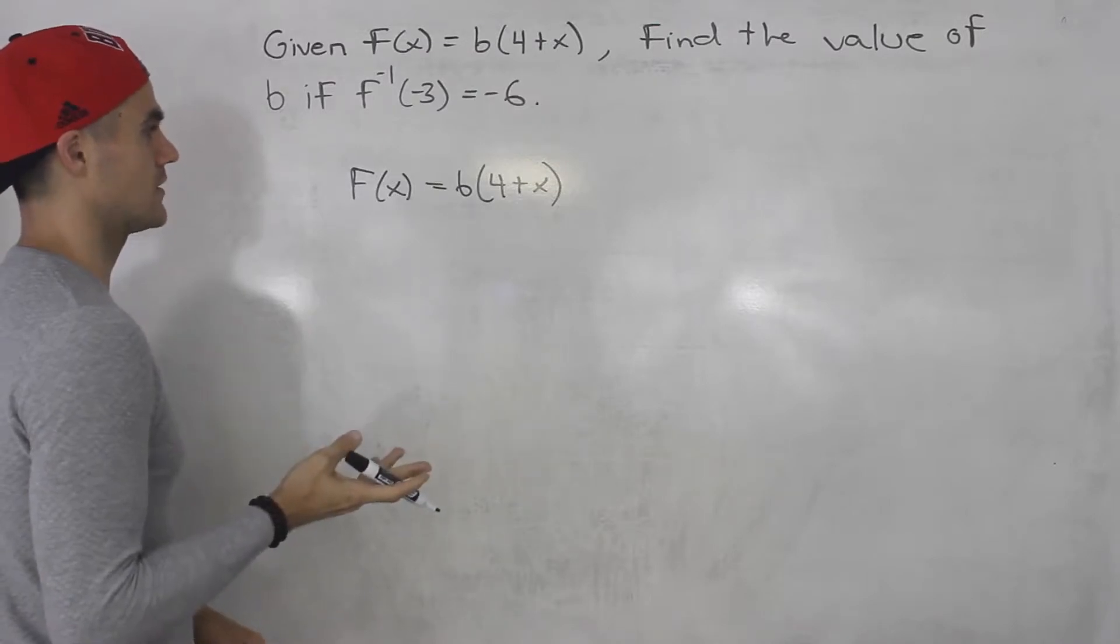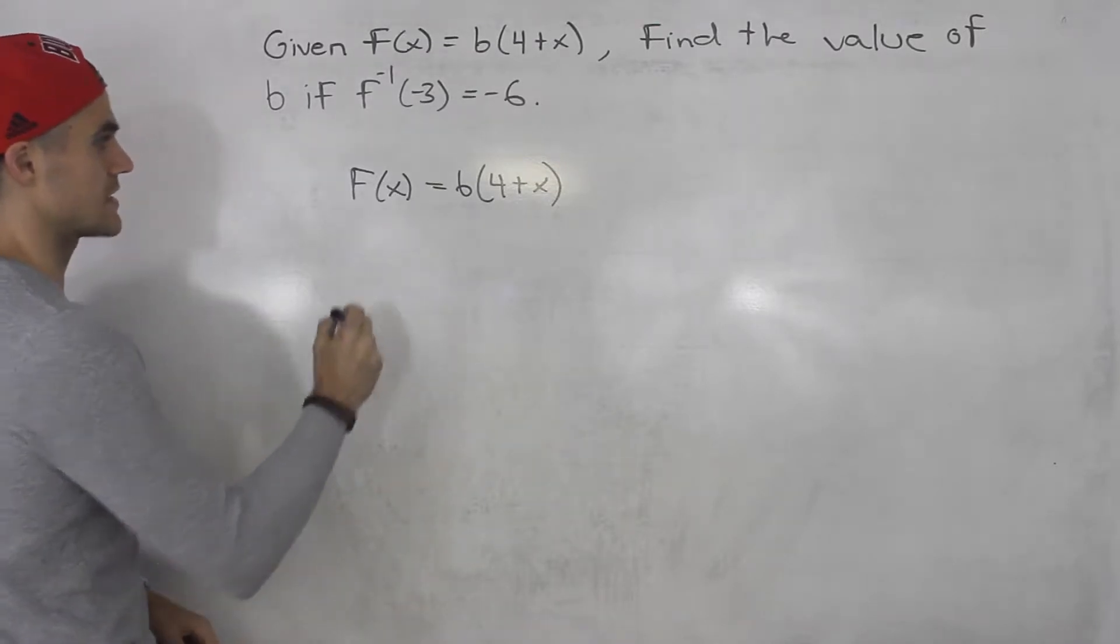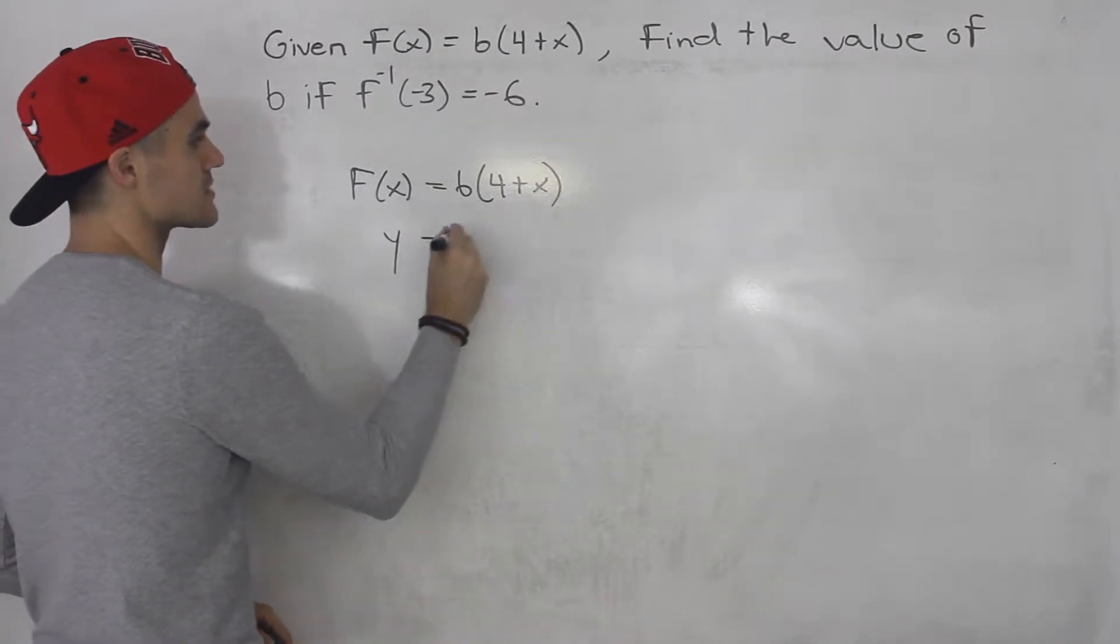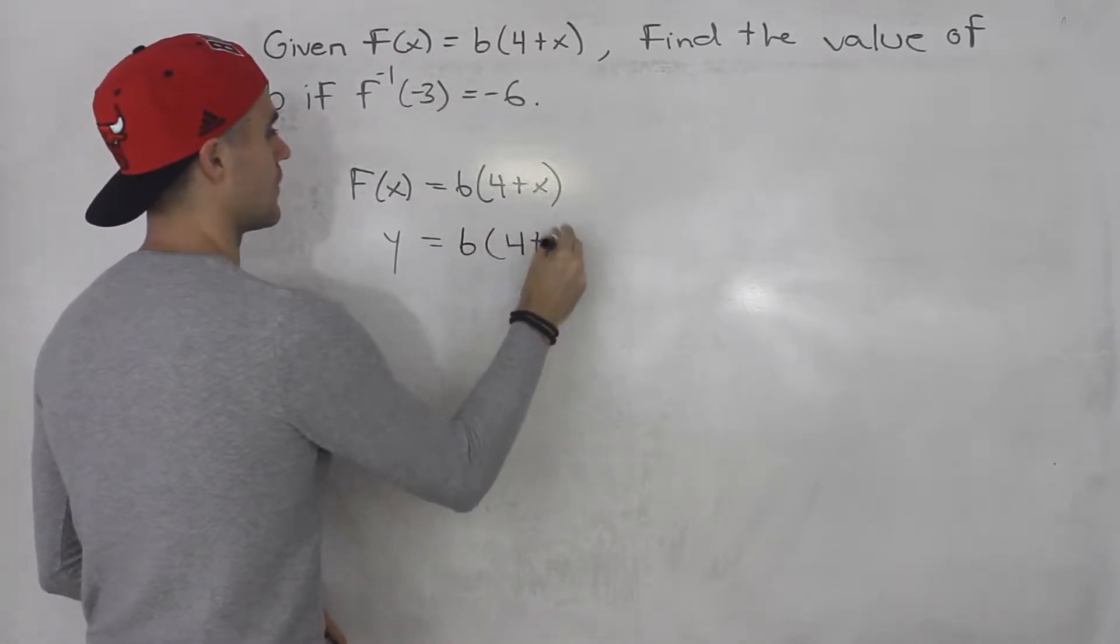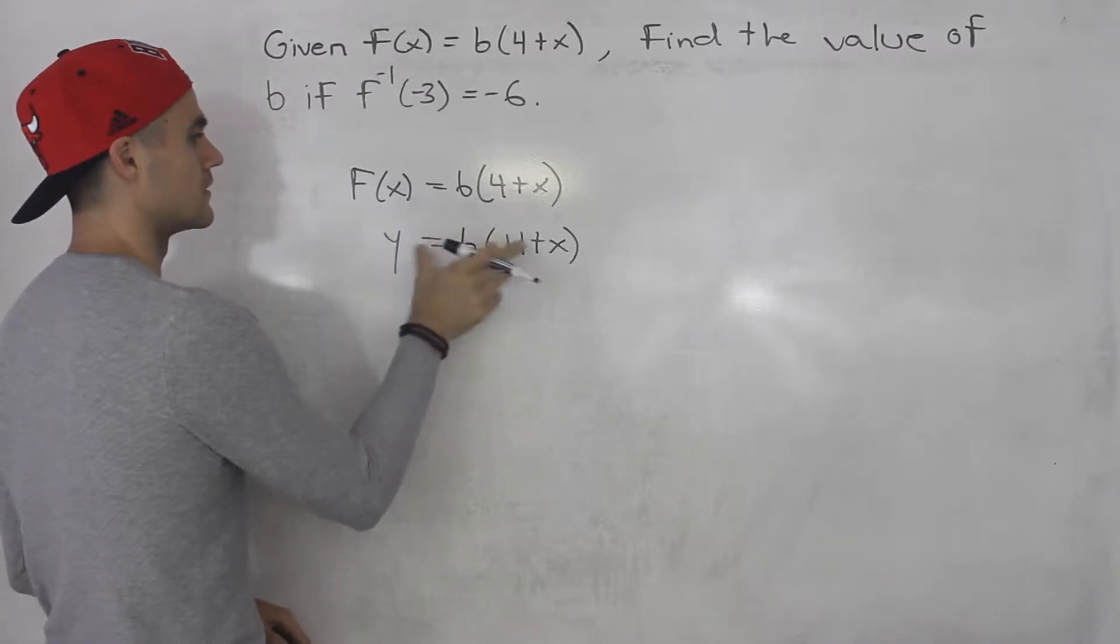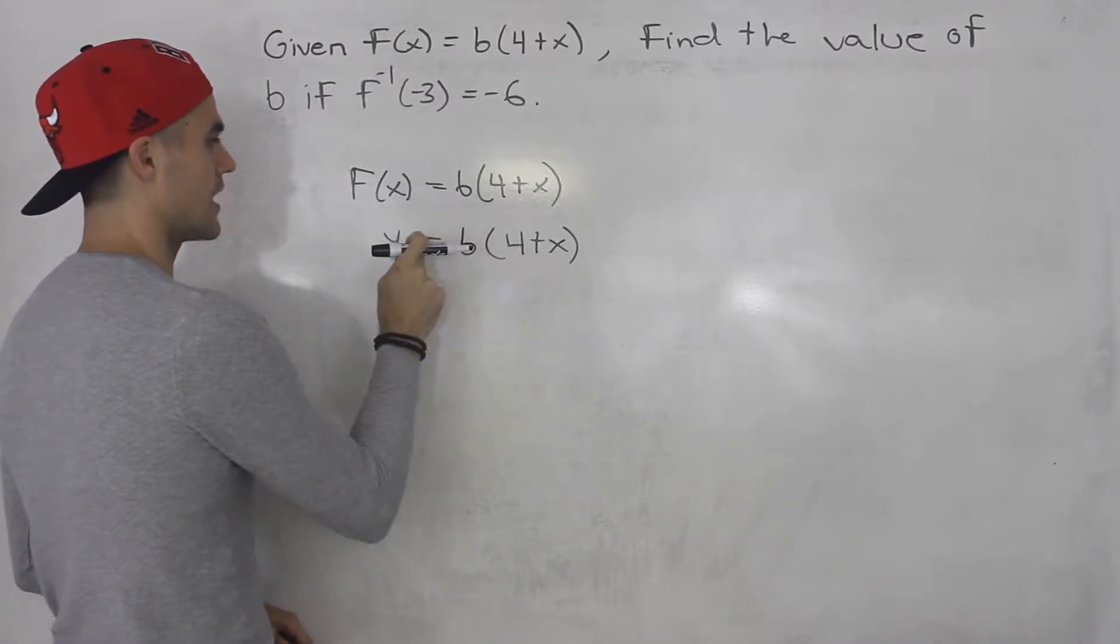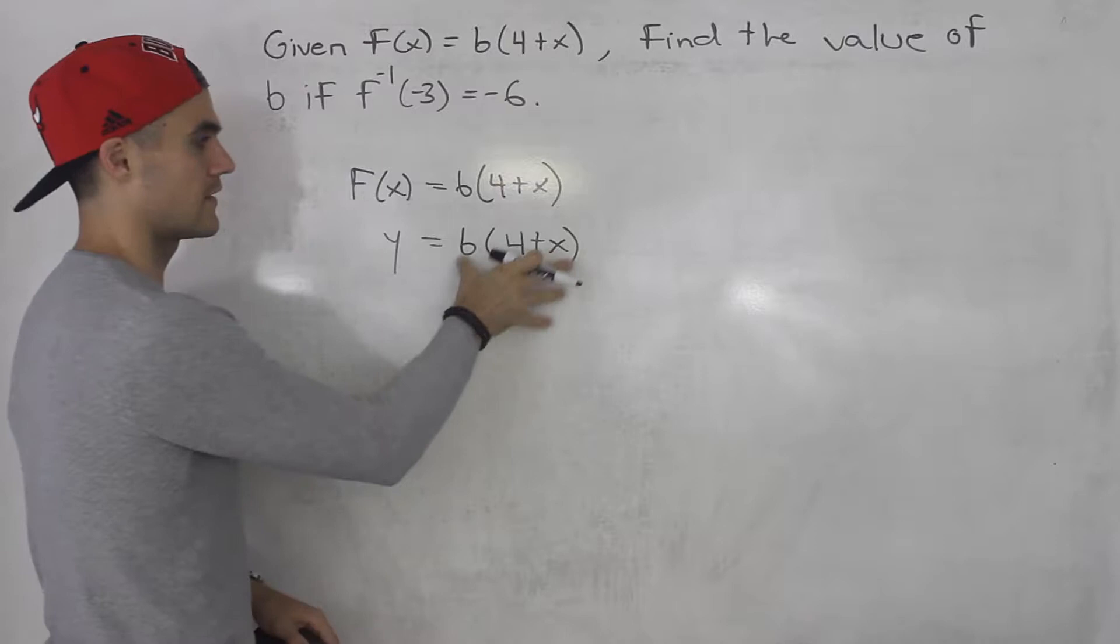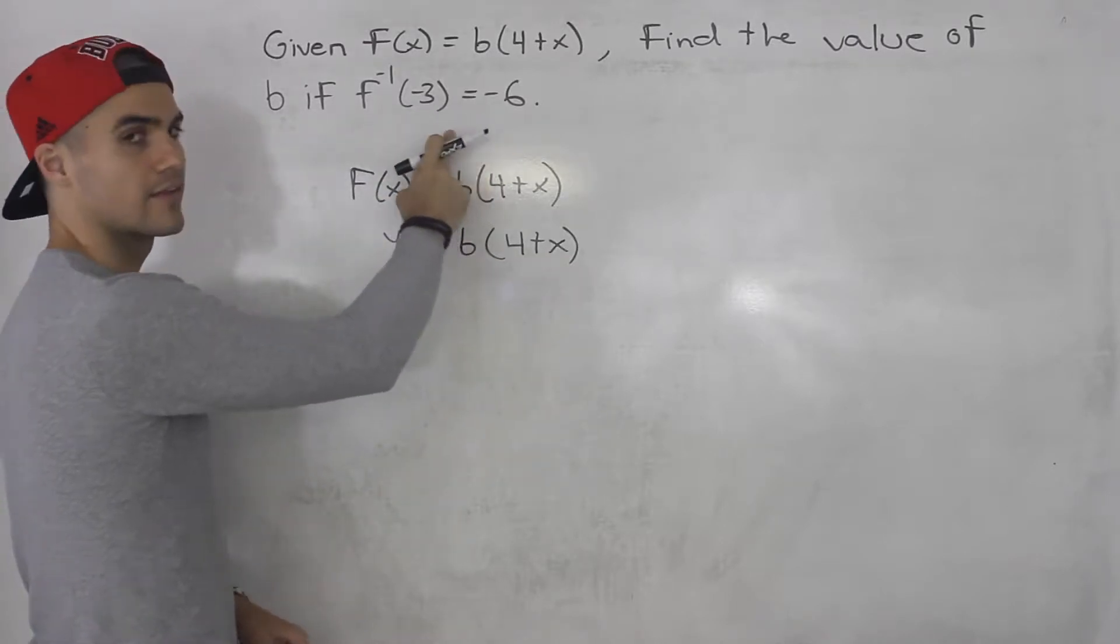The toughest way, I see a lot of students doing this, is that they'll actually find what the inverse is, and you can do that if you want. So you plug in y here, then switch up the x and y, then isolate for y and plug in the values.